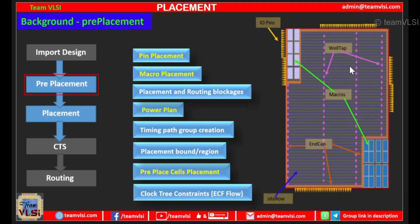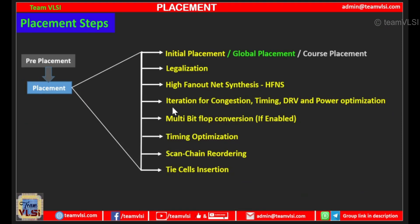Now let's move to the placement steps. In placement, our PNR tool does the following major steps: first, initial placement (also called global placement or coarse placement); then legalization; next, high fanout net synthesis or HFNS; then iteration for congestion and timing; DRV and power optimization; then multi-bit flop conversion if enabled; next, timing optimization; and finally scan chain reordering and tie cell insertion.